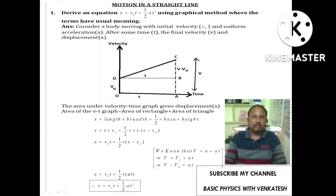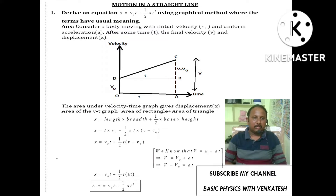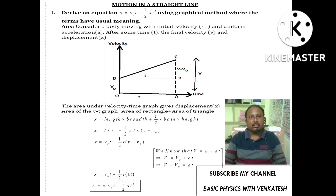Question number one: derive an equation x equal to v-naught t plus half a t-squared using the graphical method. This equation is similar to s equal to ut plus half a t-squared — it is the second kinematic equation, where s is replaced by x and u is replaced by v-naught.